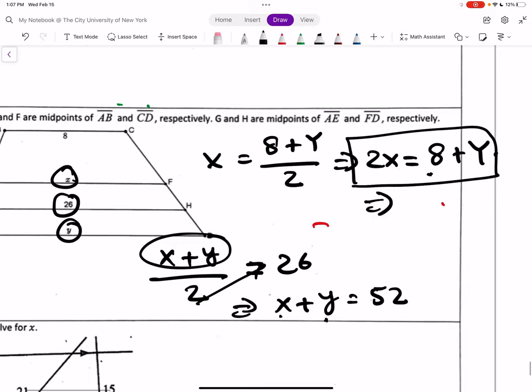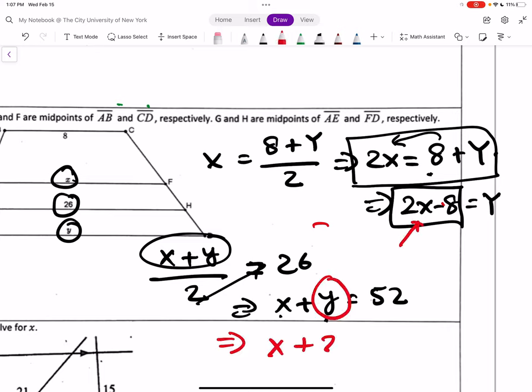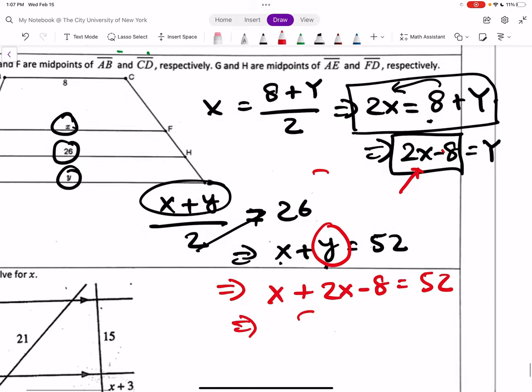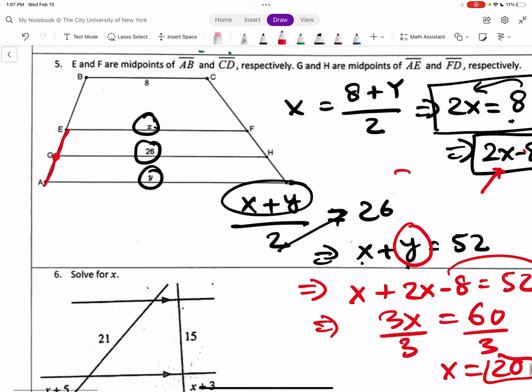Let's plug in. Why I will prefer not to go with X because that will give me a fraction. So I shift this one here. 2X minus 8 is Y. And now instead of Y, I can plug in here. So let me write below. So X plus instead of Y, this value, 2X minus 8 is 52. Now you see, there is a 3X. This is this, 60. So divide by 3, divide by 3, X is 20. So you get your X as 20.